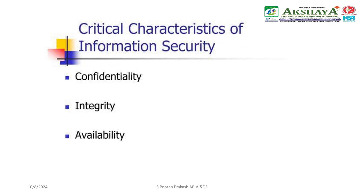There are three main critical characteristics of information security. They are confidentiality, integrity, and availability. They are referred to as CIA.